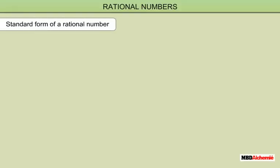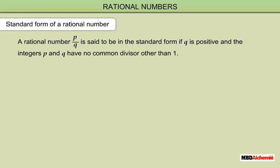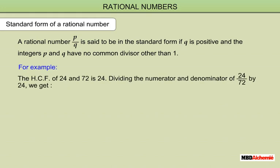Standard Form of a Rational Number: a rational number p upon q is said to be in the standard form if q is positive and the integers p and q have no common divisor other than 1. For example, the HCF of 24 and 72 is 24. Dividing the numerator and denominator of 24 upon 72 by 24, we get 24 upon 72 is equivalent to 1 upon 3.